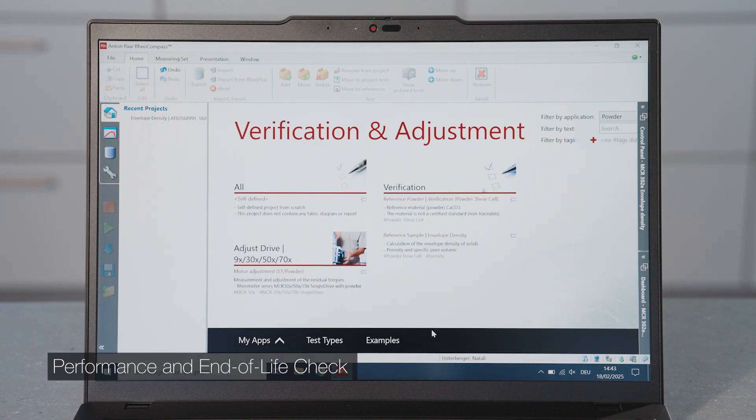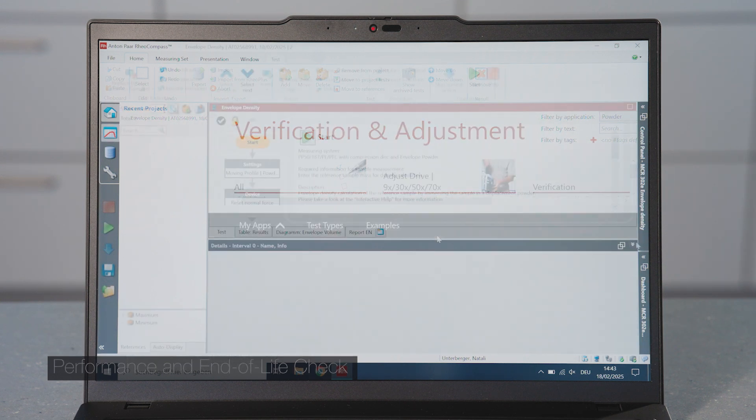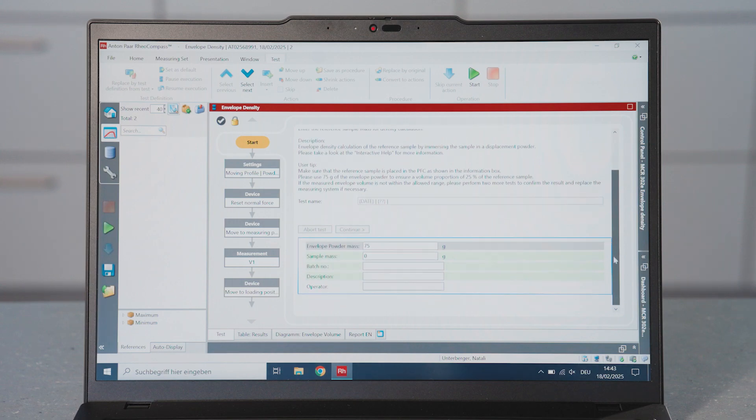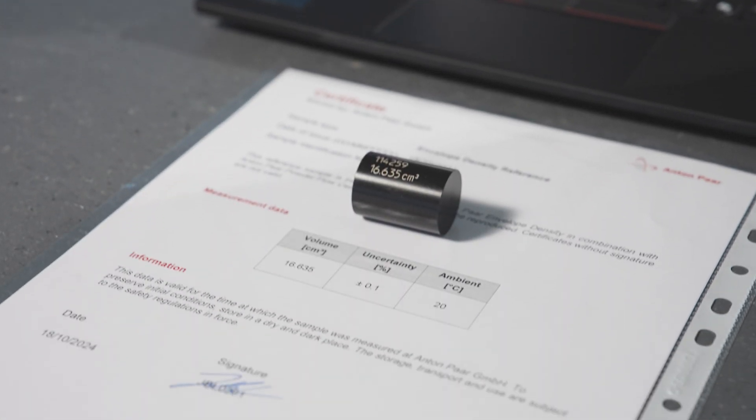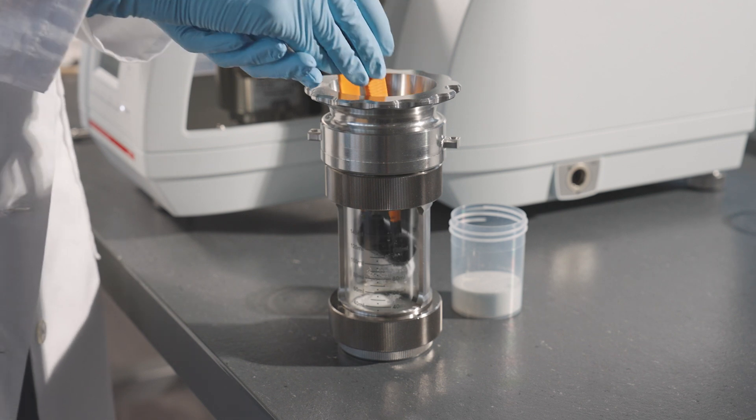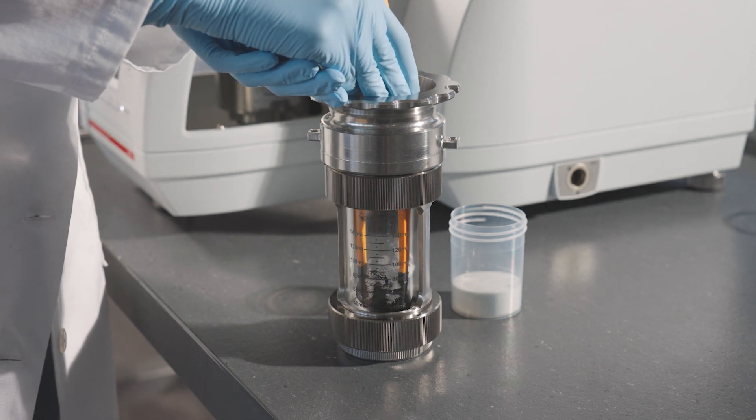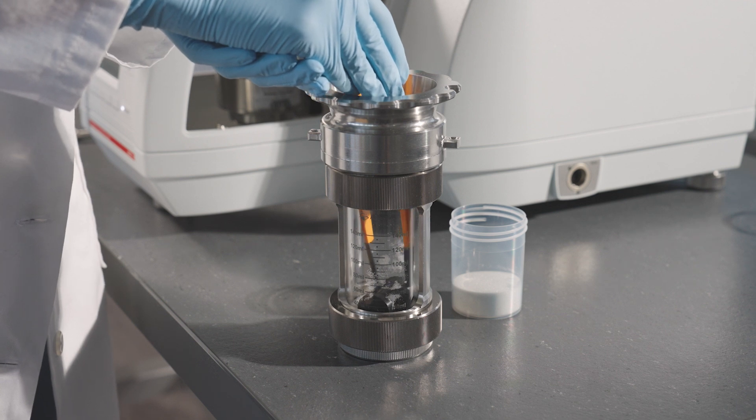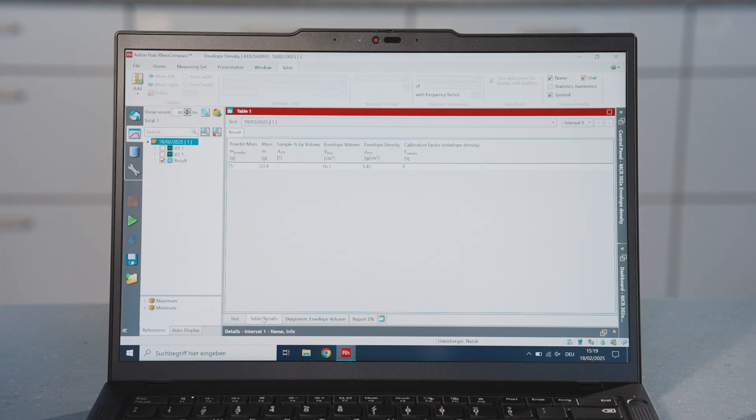Carry out a performance check by using the test template reference sample envelope density. Use 75 grams of the envelope powder to measure the supplied reference sample. Load the reference sample as instructed. Check the results in the results diagram of the measurement report.